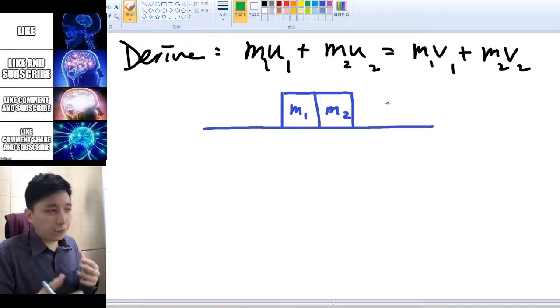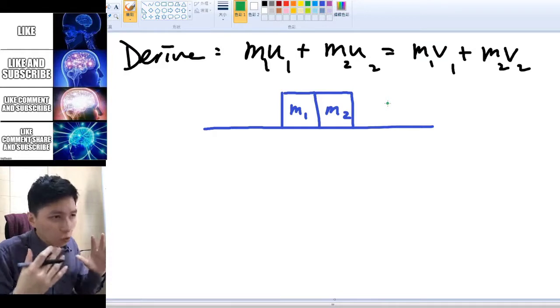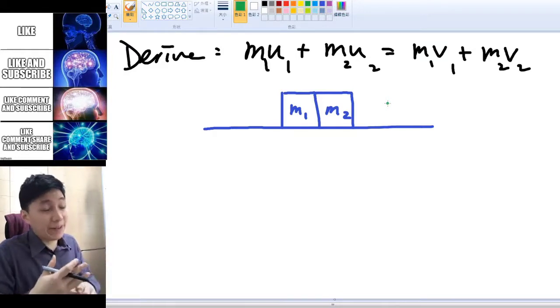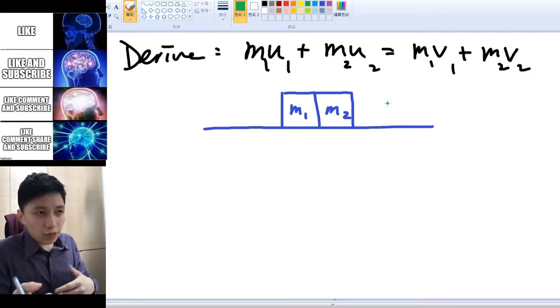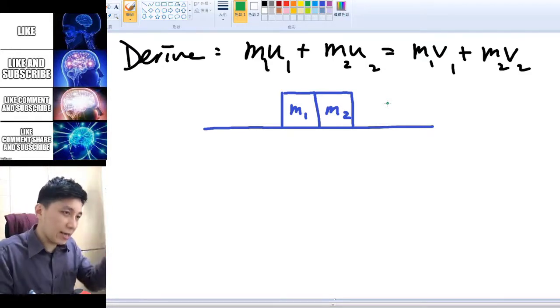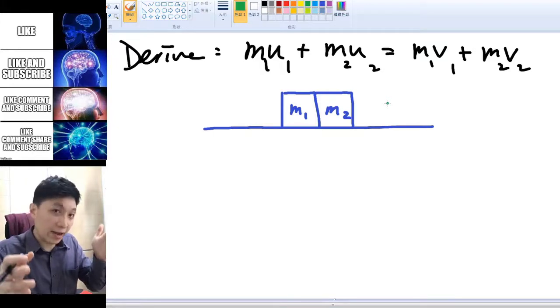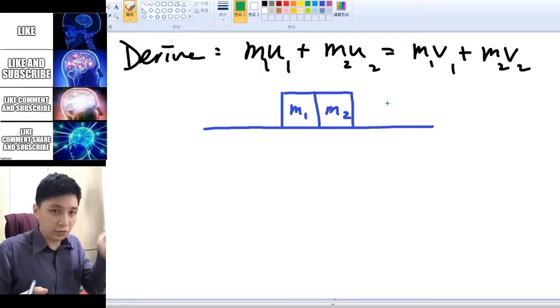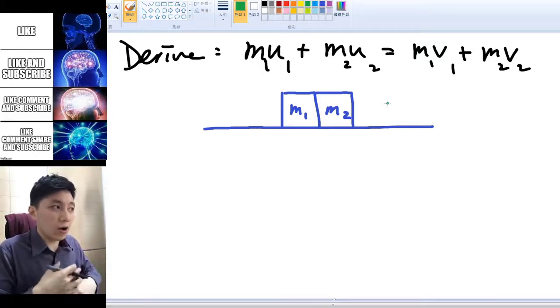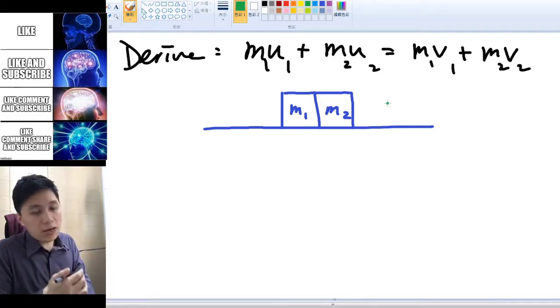Okay, and Newton's third law told you that whenever there's a force, there must be another force that is acting on the other object. So let's say the force that you see is A acting on B, then there's another force that is B acting on A, and they are of the same magnitude and opposite direction.